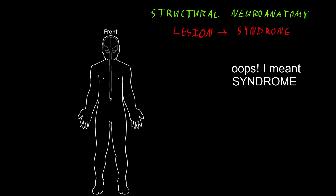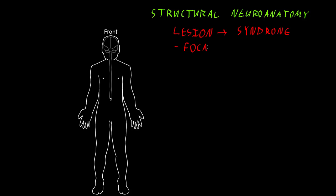We usually like to divide up the neurological syndromes into those caused by lesions that are focal versus those that are what we call diffuse. So diffuse versus focal lesions causing syndromes related to those diffuse or focal lesions, which we'll often call focal neurological syndromes versus more diffuse neurological syndromes.